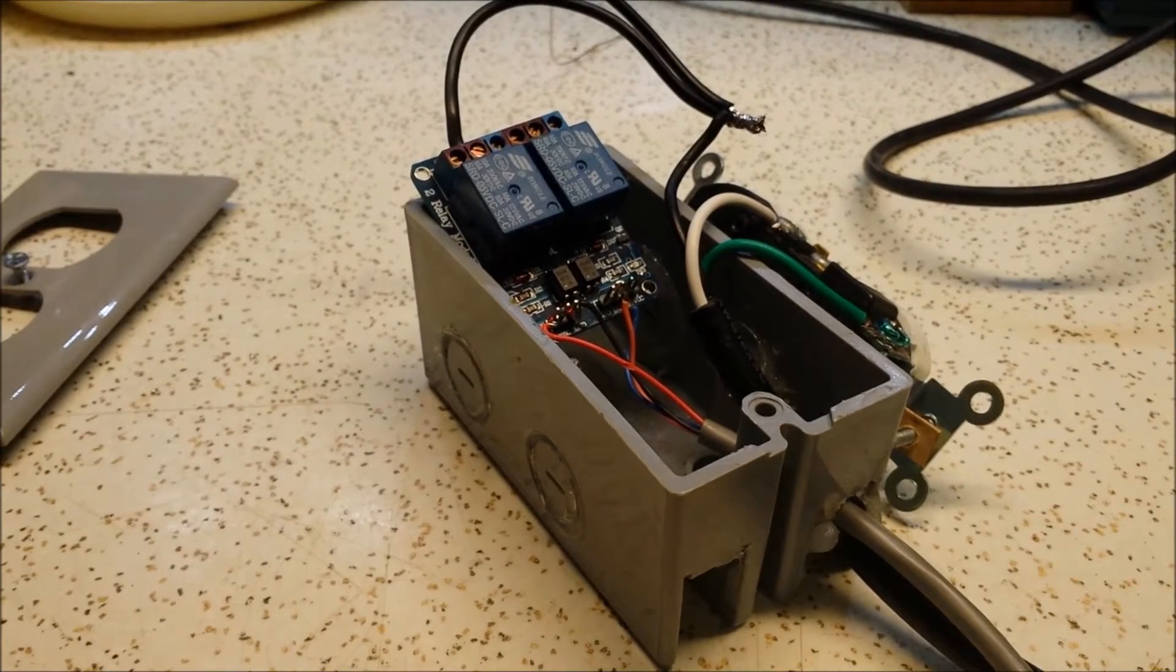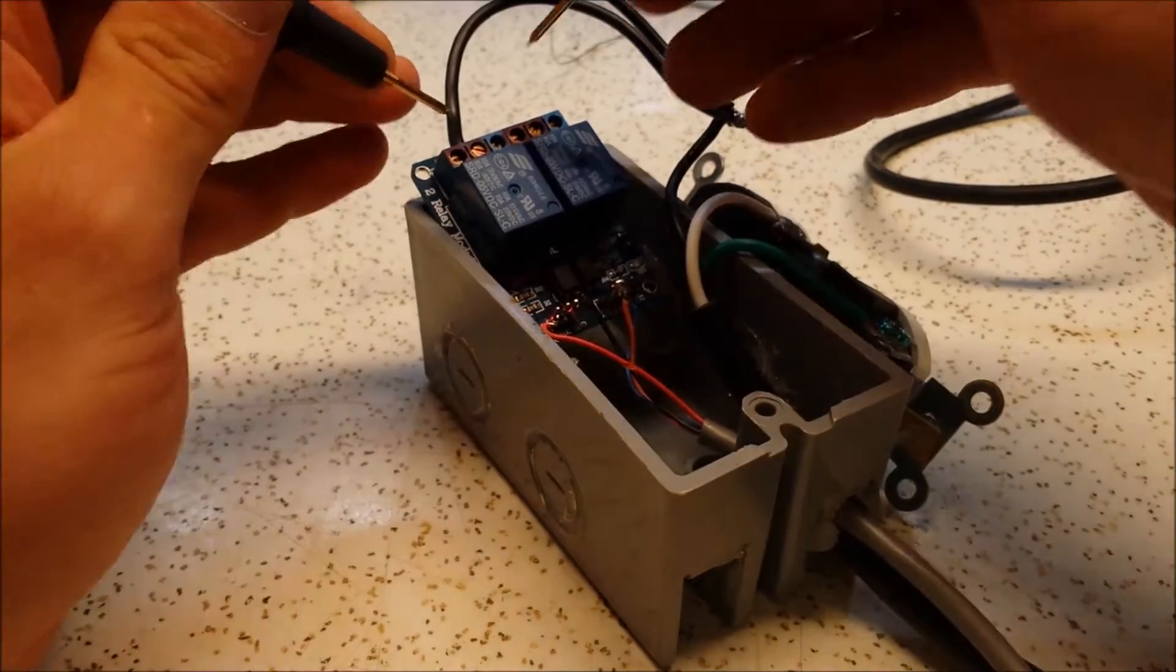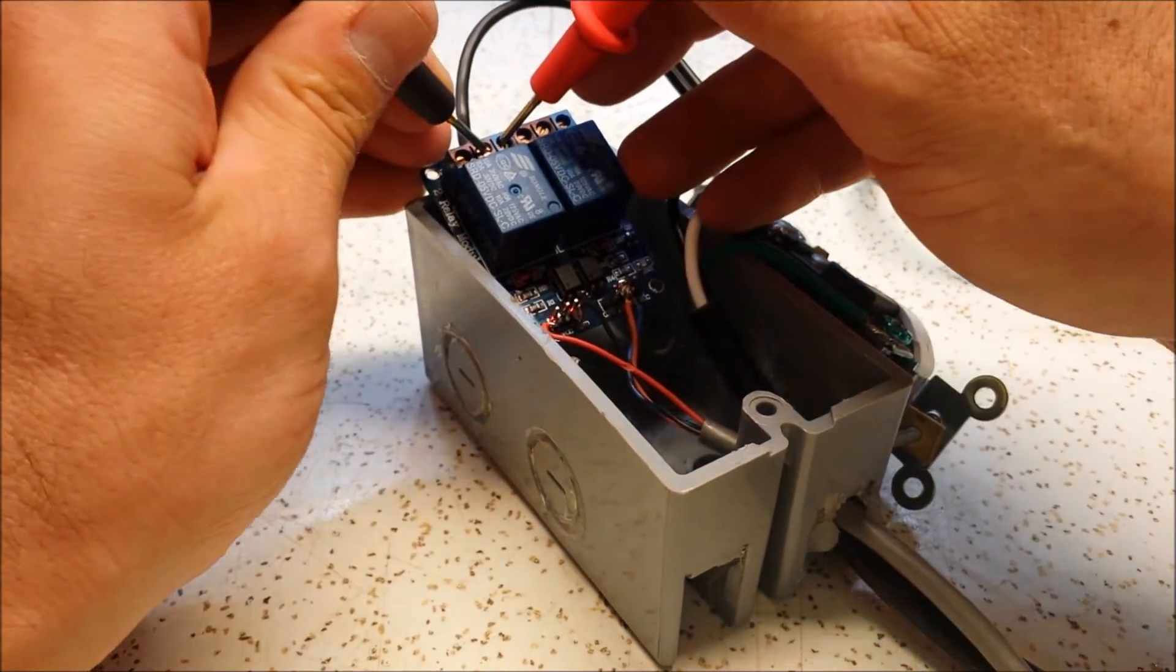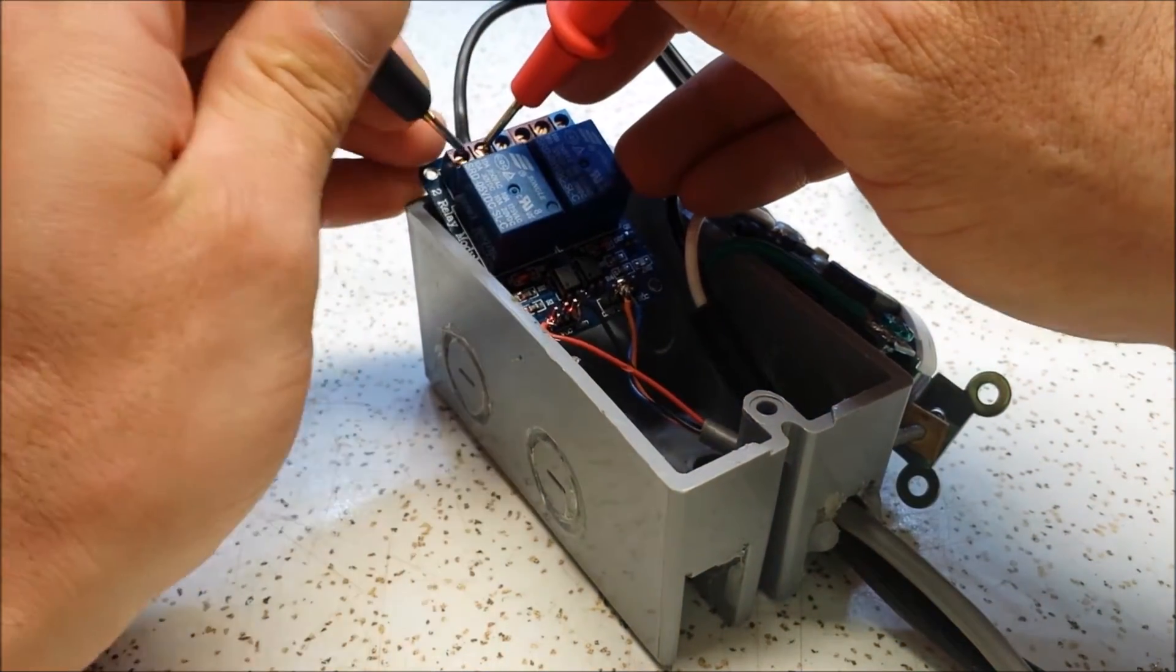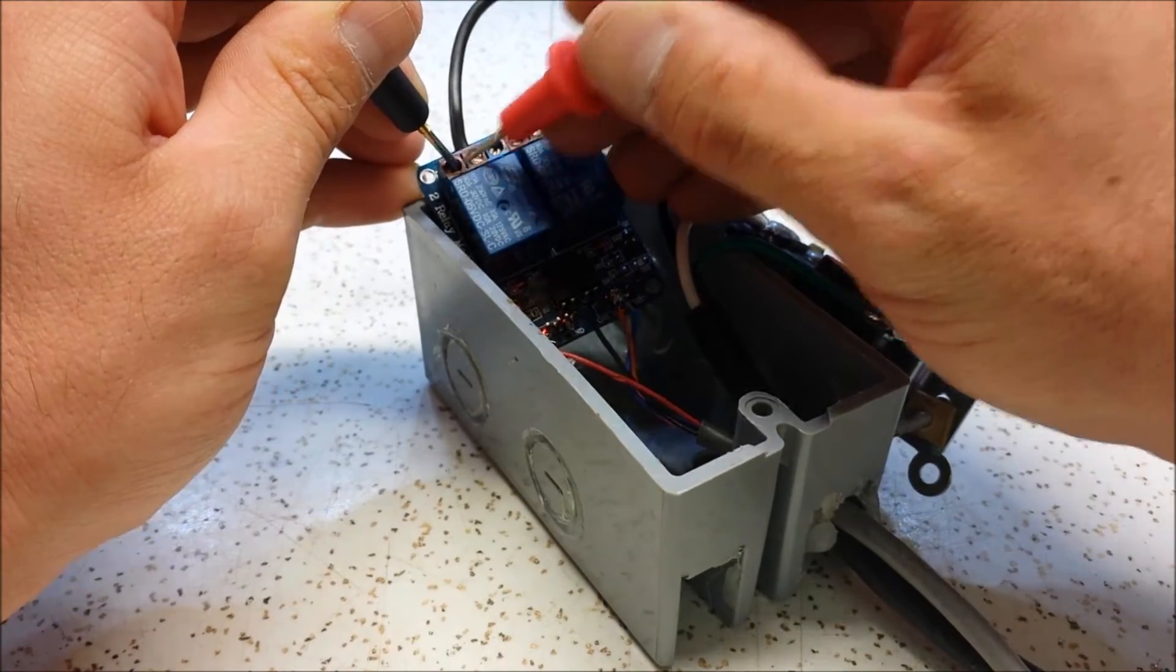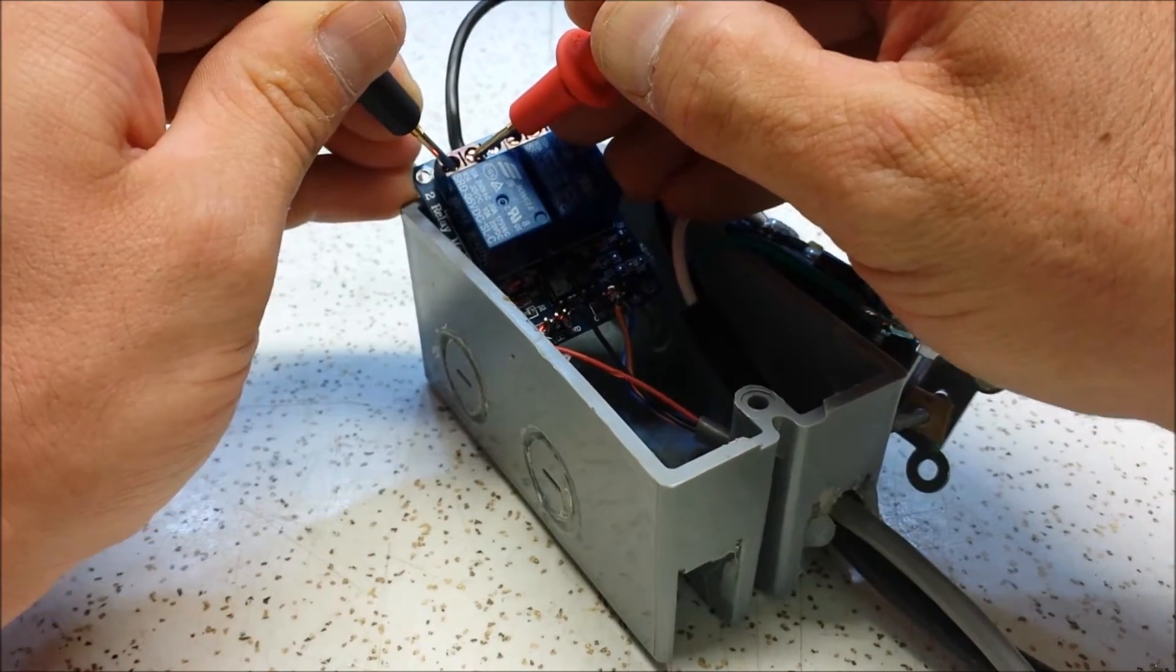Alright, so I think the two centers are actually the normally closed port. Alright, so what I did was I just gave them some power here to make the relay energize. And let's see. Yeah, so these two, this pin and this pin are the normally closed.